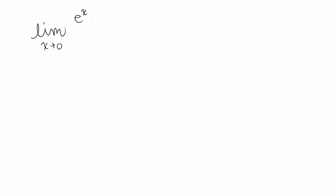We're going to do an example of using L'Hôpital's rule on a form of 0 over 0. Let's look at the limit as x goes to 0 of e to the x minus x minus 1, all over 3x squared.